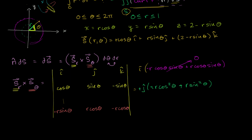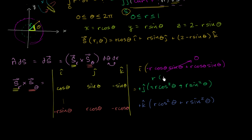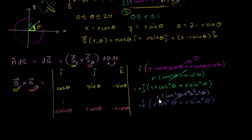For the k component, ignoring the top row and last column: cosine theta times r cosine theta is r cosine squared theta, and we subtract negative r sine theta times sine theta, which gives plus r sine squared theta. So the k component is r cosine squared theta plus r sine squared theta. By the Pythagorean trig identity, cosine squared theta plus sine squared theta equals 1, so the j component simplifies to r times j and the k component simplifies to r times k.